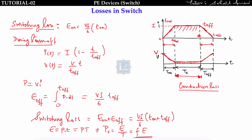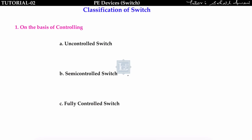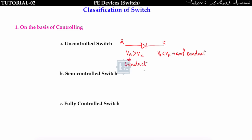Switches are classified by controllability into three categories. Uncontrolled switches cannot have their on or off state controlled by us — it depends on the supply. Example: a diode conducts when V_A > V_K and stops when V_A < V_K. We have no control over conduction.